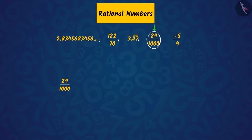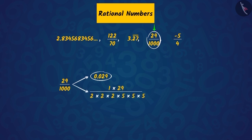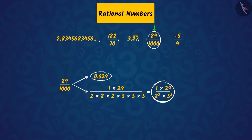Now, if we look at 29 upon 1000, we can write it straight as 0.029 based on the knowledge of our previous classes. Or, we can factorize the numerator and denominator, as the denominator is in the form of 2 raised to n into 5 raised to m. Both ways lead to the same conclusion that the decimal expansion of this rational number will be terminating.